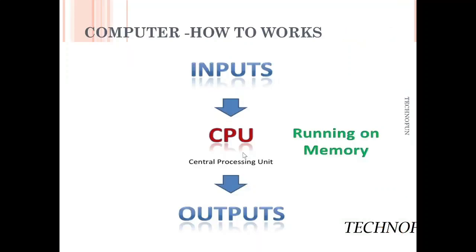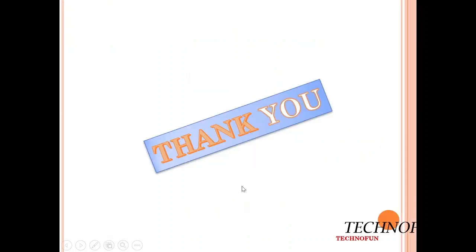So now we can see how a computer works: data is input through input devices, processed through the CPU, output through output devices, and this data is stored in memory. Thank you.